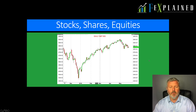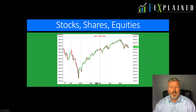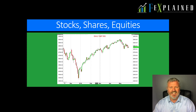Here we have an example of an equity index — the S&P 500. These are the 500 largest stocks on the US stock market. This is an index or an average, so it gives you an idea of approximately how the whole stock market in this country — in this case the United States — is doing.